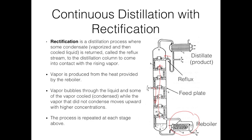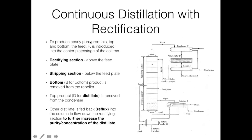This process is repeated at each stage — in this case there are seven stages — until a certain degree of purity has been reached, producing nearly pure products at the top and the bottom, effectively separating the two components. The feed F is introduced somewhere in the center of the column at a certain plate. Anything above the feed plate is called the rectifying section, and anything below the feed plate is the stripping section.